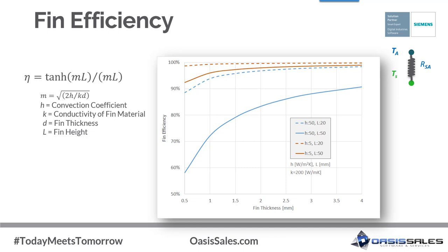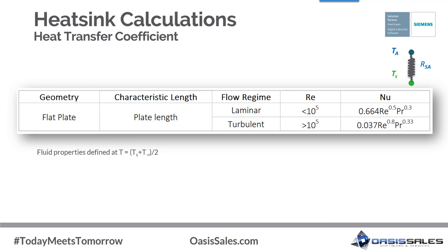As heat conducts into the fin, there is also inefficiency due to the temperature gradient, known as fin efficiency — the ratio of actual heat transfer rate to that if the fin were at uniform temperature. The formula shown assumes the fin tip is adiabatic. The plot shows fin efficiency versus fin thickness for fins at two heights and two heat transfer coefficients, assuming thermal conductivity of 200 W/m·K. Higher heat transfer coefficients for longer or thinner fins yield the lowest efficiency. Fin thickness and material — such as copper versus aluminum — could be considered to address this.